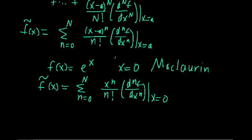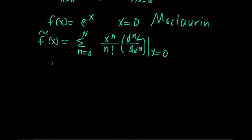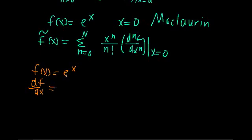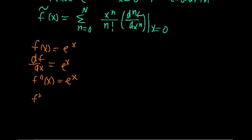Before plugging anything in, let's figure out what the derivative terms are. For f of x equals e to the x, the first derivative df/dx equals e to the x. If you're familiar with e to the x, you'll recall that the derivative of e to the x is just e to the x. That means the second derivative is also e to the x, the third derivative is also e to the x, and in fact the nth derivative is also e to the x.